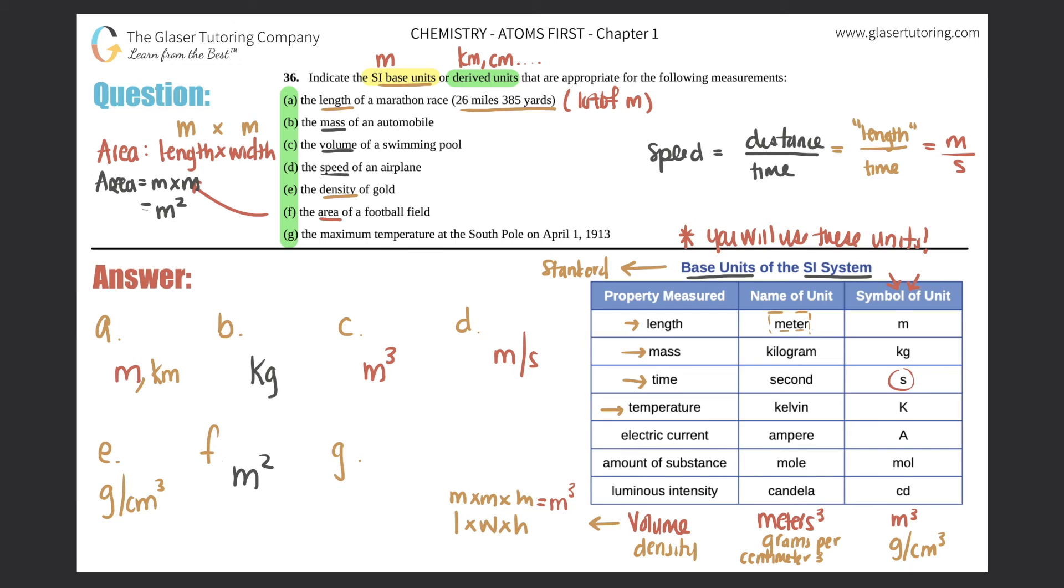And then last but not least, g, the maximum temperature at the South Pole on April 1st, 1913. Temperature, its SI unit is kelvin. It is not Fahrenheit and it's not Celsius, it is kelvin. So this one is capital K. And notice that there is no degree sign for K. We see a degree sign for Fahrenheit and Celsius, but there is no degree sign for kelvin. Please do not write K with the notch on the top. No, no, it's just K. The other ones you can, but kelvin there is no degrees.